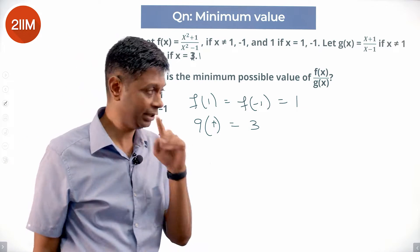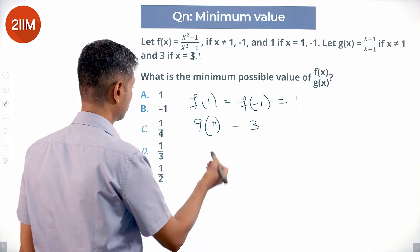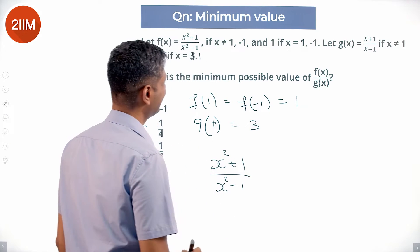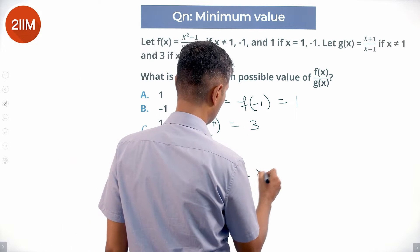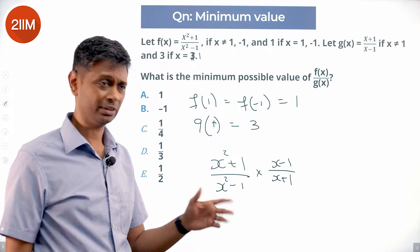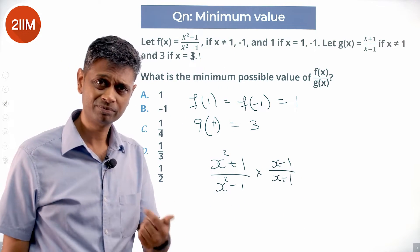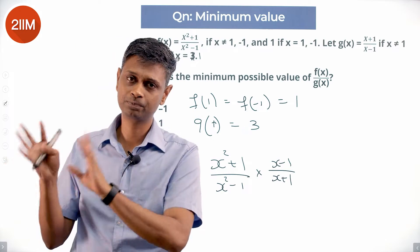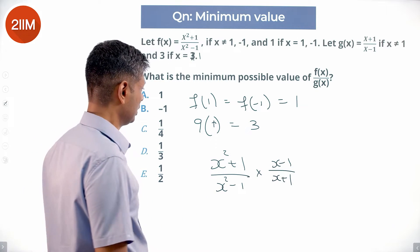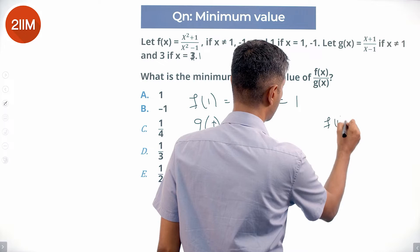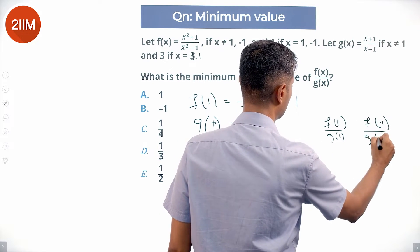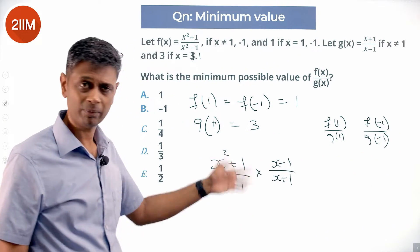What are the minimum possible values of f(x)/g(x)? Write the expression: (x² + 1)/(x² - 1) divided by (x + 1)/(x - 1), which equals (x² + 1)/(x² - 1) times (x - 1)/(x + 1). I'm not going to worry about x = 1 and x = -1 for now — I'll treat those separately.